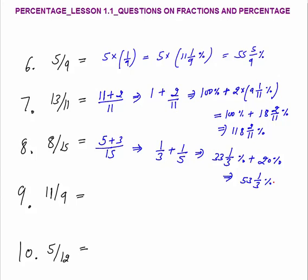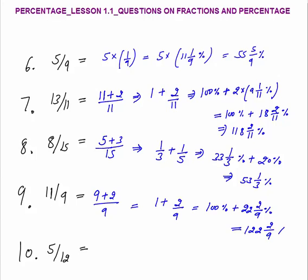11 by 9: break this as 9 plus 2 by 9. So 9/9 is 1, giving 1 plus 2/9. 1 means 100%. 1/9 is 11 and 1/9%, so 2/9 is 22 and 2/9%. Final answer: 122 and 2/9%.